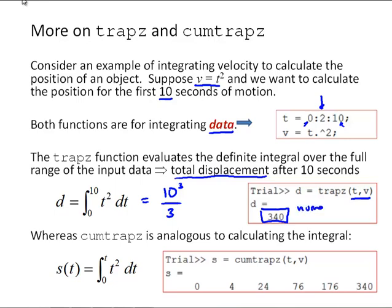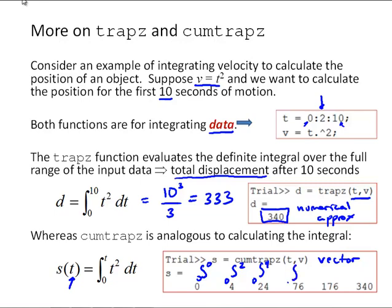Remember this is a numerical approximation. The exact result, 10 cubed over 3, is actually 333.3. QMTRAPZ is analogous to calculating position as a function of time, where the integral is from 0 to T of T squared dT, so the output is a vector. The first element is the integral from 0 to 0, the second from 0 to 2, then 0 to 4, 0 to 6, 0 to 8, and finally 0 to 10. Note that the last result, 340, is the same as the result from TRAPZ.